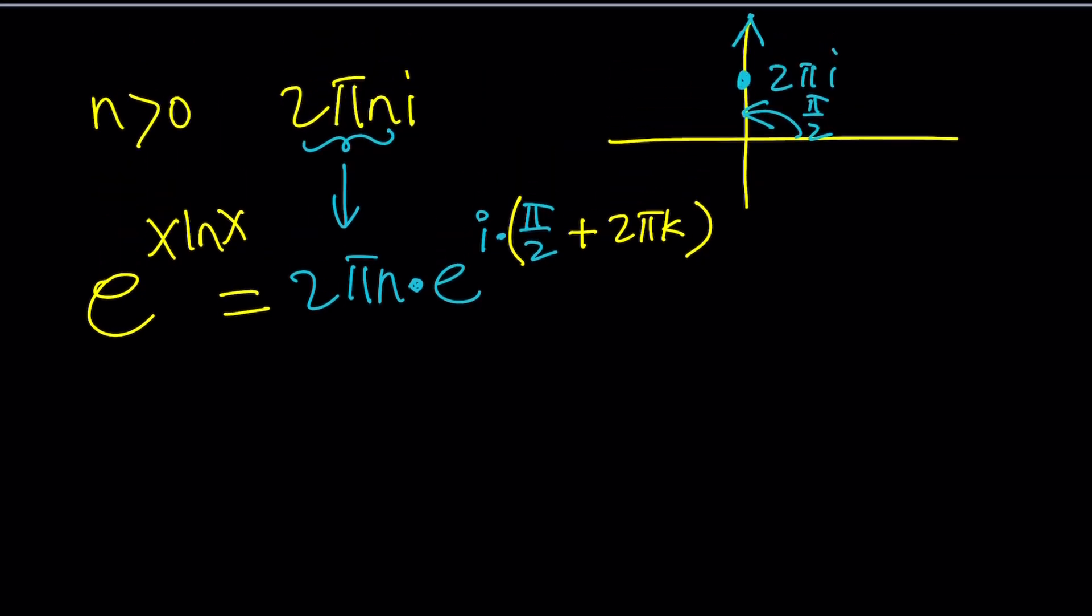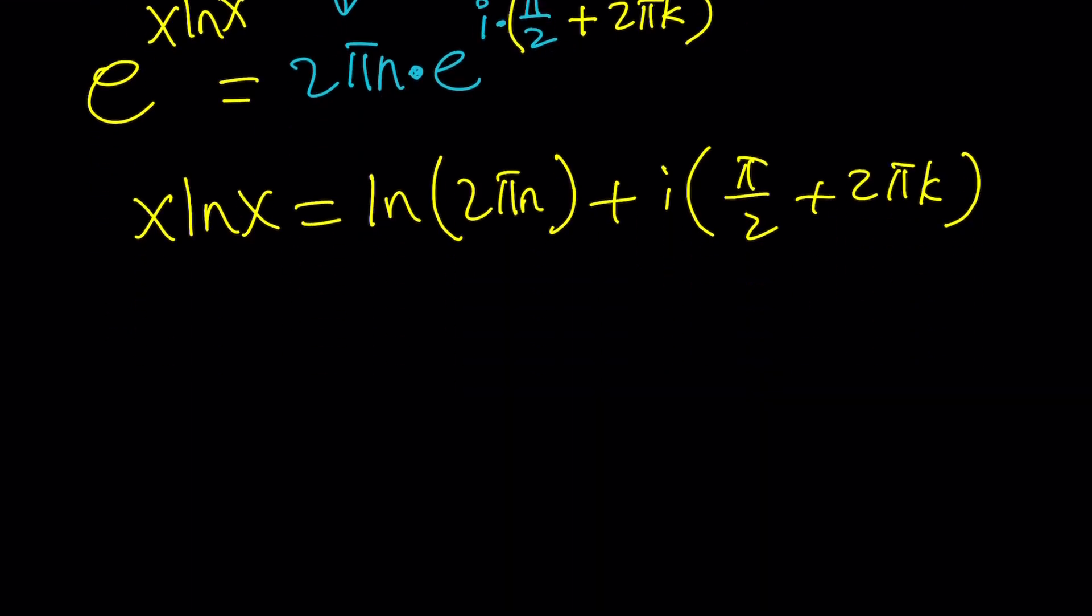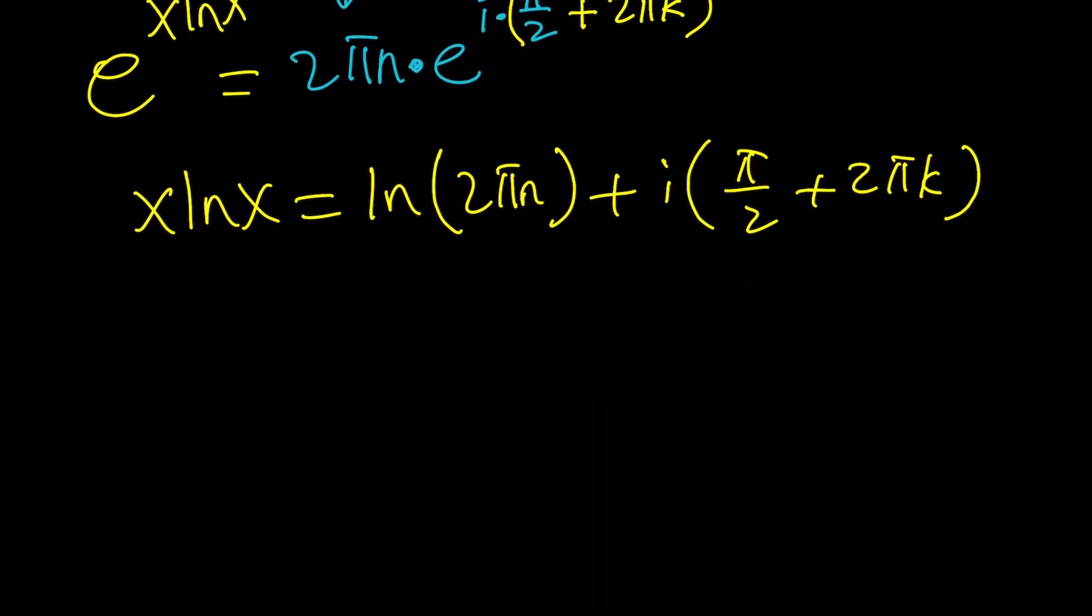But again, you can add another component to this to make matters worse, right? Because this is just the principal argument and you can always add two pi k to it. Let's just add it for now. And on the left hand side, we have e to the power x ln x. How awesome, right? Great. Now we can go ahead and try to simplify things a little bit here because this is really getting out of hand. But let me just tell you, first of all, what would you do? You would naturally log both sides and then you would get something like the ln of two pi n. By the way, if n is positive, this is real. So we're good. And then plus i times pi over two plus two pi k. So that's the natural log of a complex number, which is defined as follows.